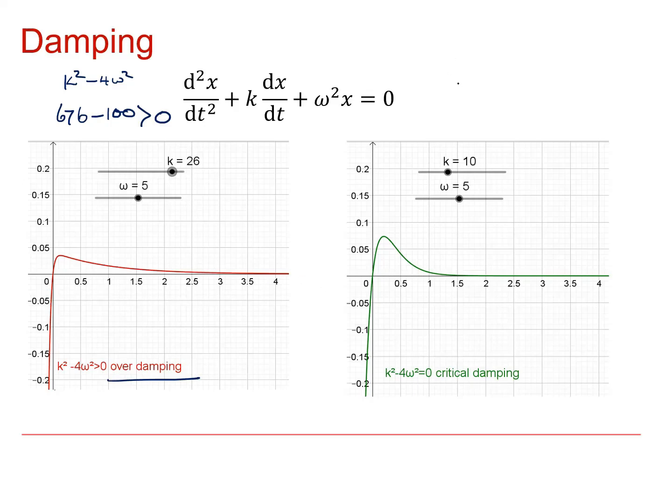And in the final situation, I've got k is 10 and omega is 5. So I get 100 minus 100 is equal to 0. And that means that my auxiliary equation will have a repeated real root. And if we look at the effect on the solution, I will get no oscillations and again a decaying over time. This is known as critical damping. It's actually very difficult to distinguish between these two situations physically because there are no oscillations. Critical damping is therefore the borderline between underdamping and overdamping.